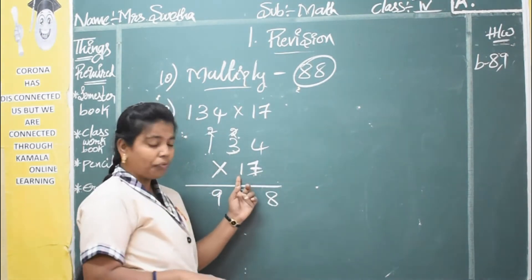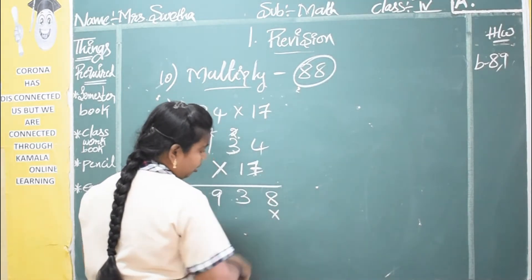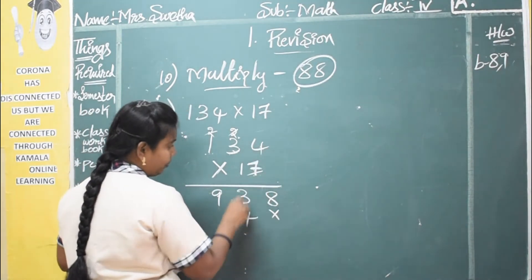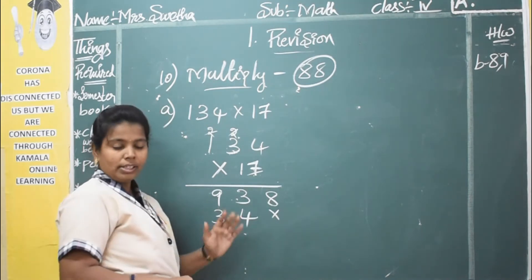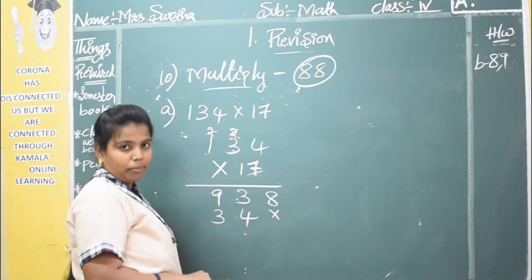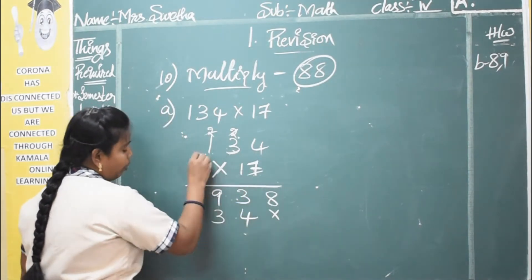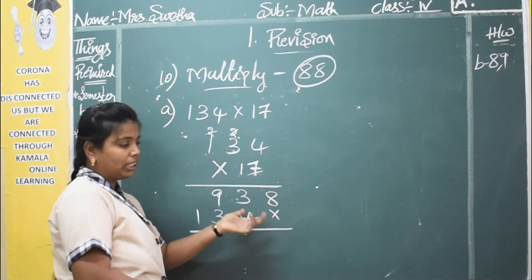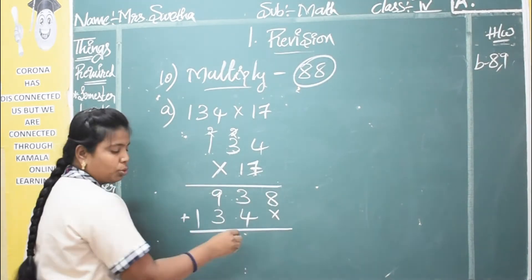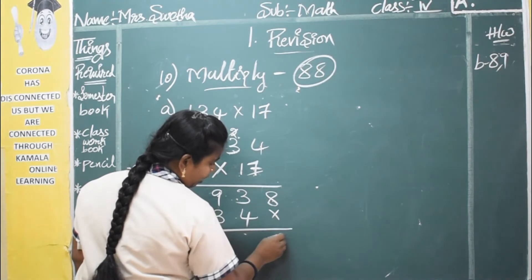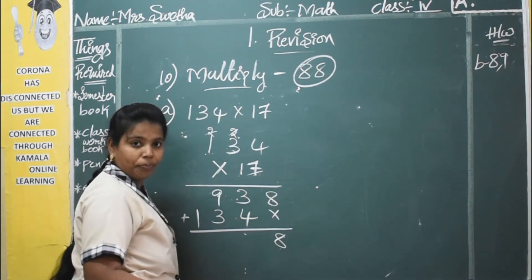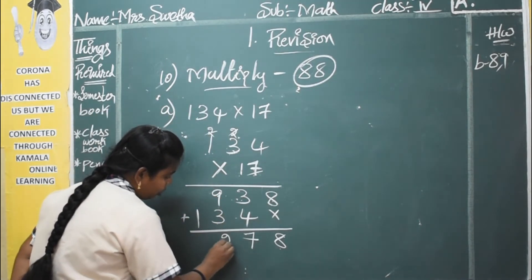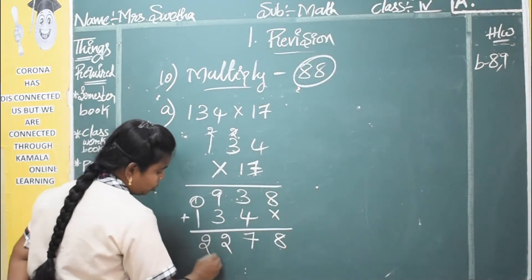Now the next digit is 2, which is in the tens place. So block the ones place — your answer also should start from the tens place. One four is 4, one three is 3, one one is 1. After completing both multiplication rows, you should have two lines. Now add the two partial products: 8 has nothing below so stays 8; 3 plus 4 is 7; 9 plus 3 is 12 so write 2 and carry 1; and that carried 1 makes 2.